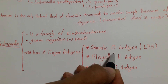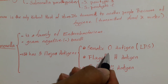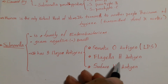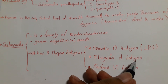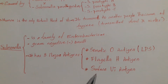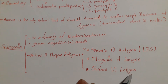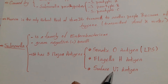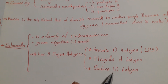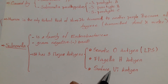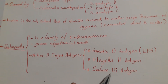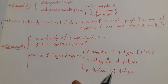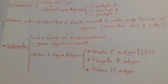First, it has a somatic O antigen, which is a lipopolysaccharide that covers it. And one more is the flagellar H antigen, which is important for the bacteria's movement. And the last one is the surface Vi antigen. It covers around the bacteria and is also very important — it is found only in Salmonella typhi and Salmonella paratyphi, and it helps the bacteria escape from our immune system, like white blood cells.